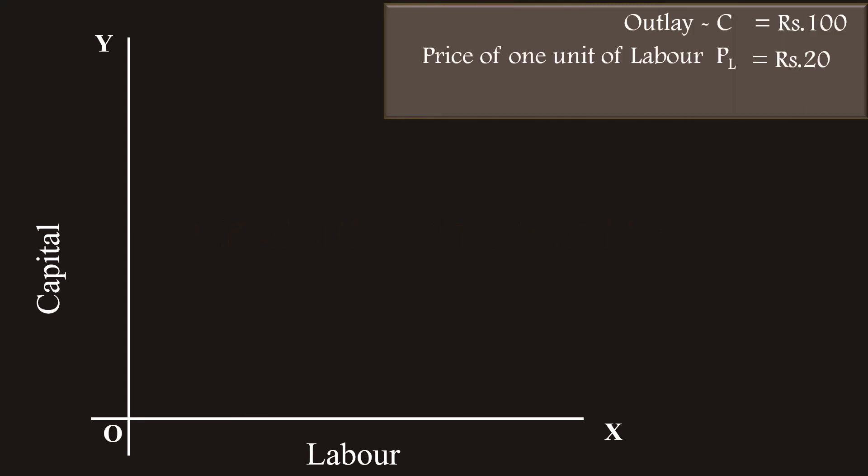The price of one unit of labor, PL, 20 rupees. The price of one unit of capital, PK, 5 rupees. If the producer spends the entire outlay only on capital, he can buy 100 by 5, 20 units of capital. Then, 0,20 is a point on the isocost curve. Let us name it as point A. It is plotted along the Y axis.